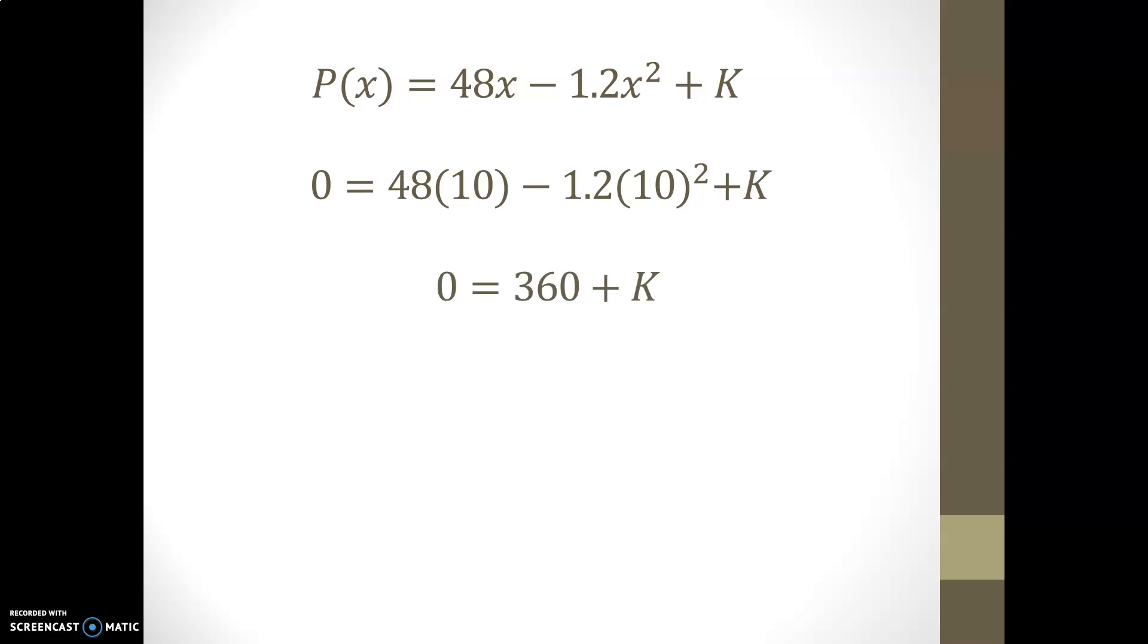So computing all the numbers that are now available, we can find that the appropriate constant to meet both the derivative we know about the function and the initial condition, or the condition on the breakeven point, is that k must be minus 360. So inserting this value into our profit function, we now have its exact expression.